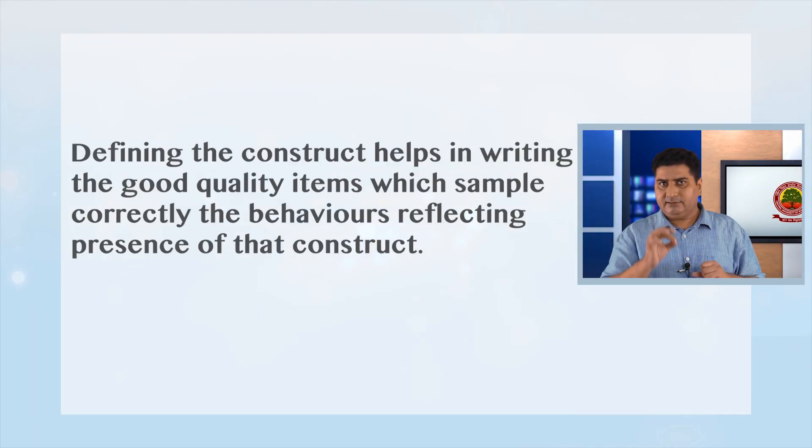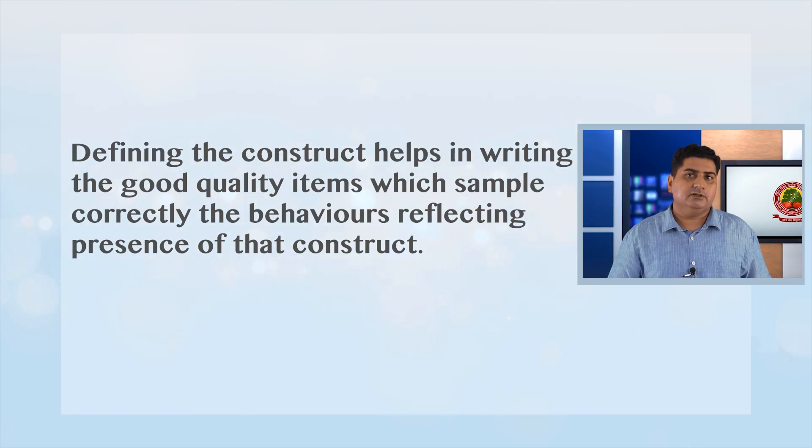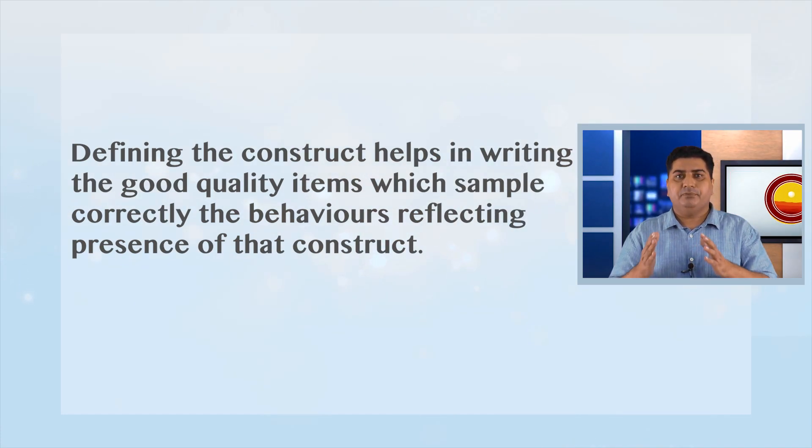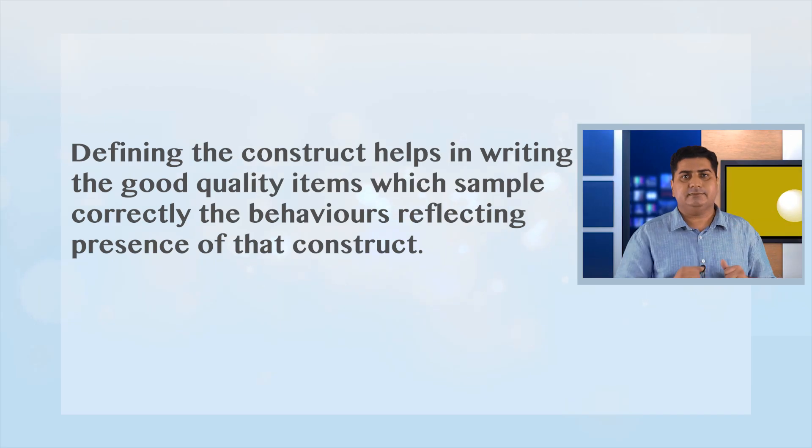For example, take Case 1 — the construct we need to define is achievement. Since achievement is already a well-defined construct, we will define it operationally, specifying how achievement in ninth class physics will be reflected. The main point is that defining the construct helps in writing good quality items which correctly sample the behaviors reflecting the presence of the construct. If we know the construct well and identify the directly observable behaviors reflecting its presence, we can write effective items.